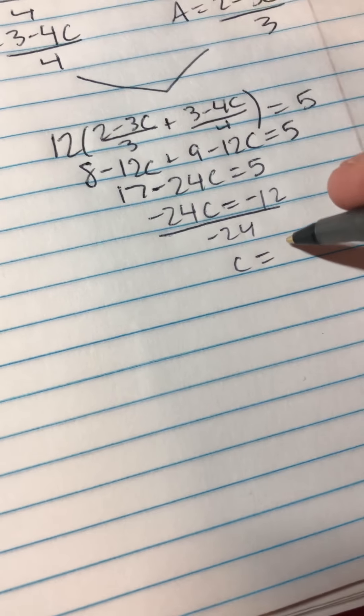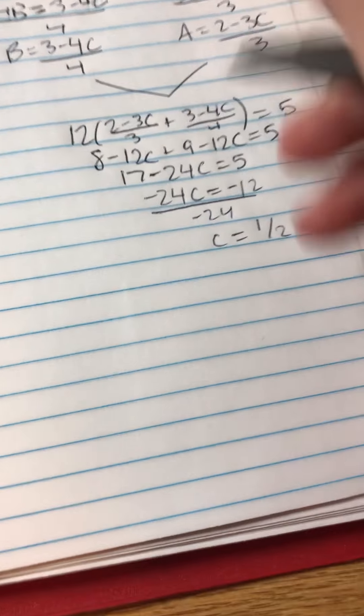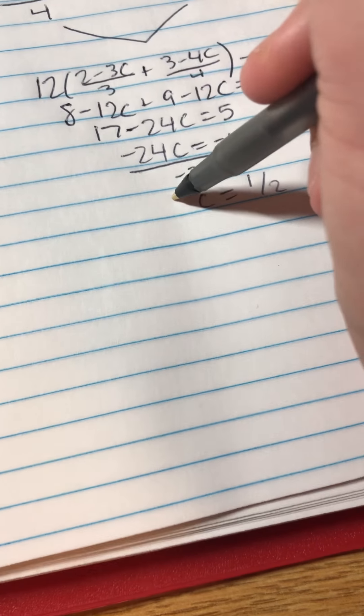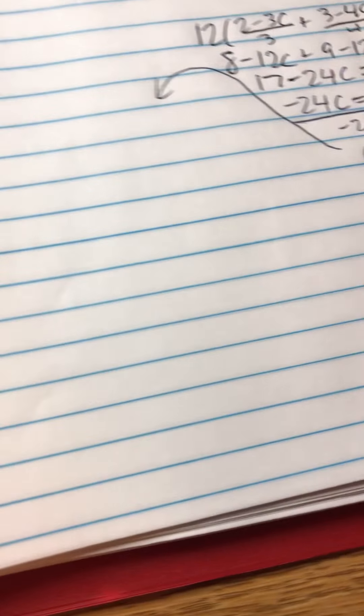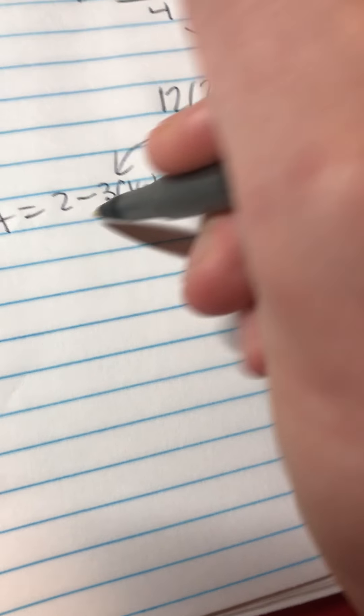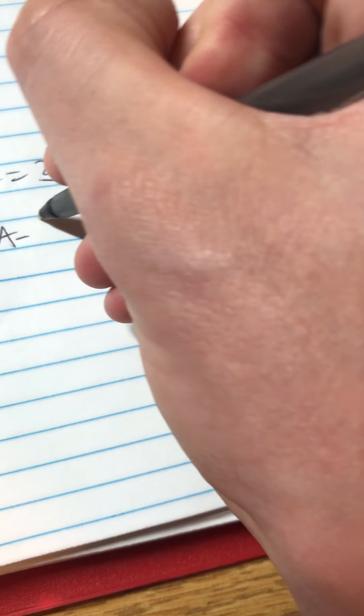So we're going to plug C back in for A. So we're going to plug back into this equation since you have C. So it's going to be A equals 2 minus 3 times 1/2 over 3. I simplified this, so I made 2 into 4 halves minus 3 halves over 3. A equals 1/2 over 3, which is the same as 1/6.